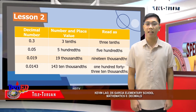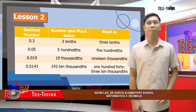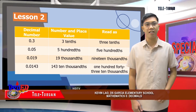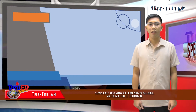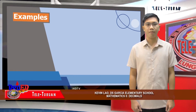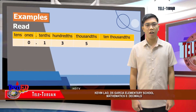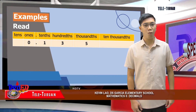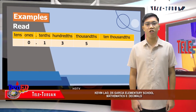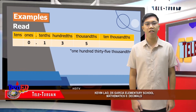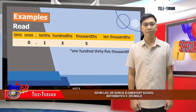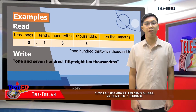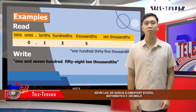When writing decimals, remember that one decimal place means tenths, two decimal places mean hundredths, and so on. We can use the place value chart to guide us in writing and reading decimals. For example, number one: we read the given digit as one hundred thirty-five thousandths. For number two: one and seven hundred fifty-eight ten-thousandths is written in decimal form on the chart.